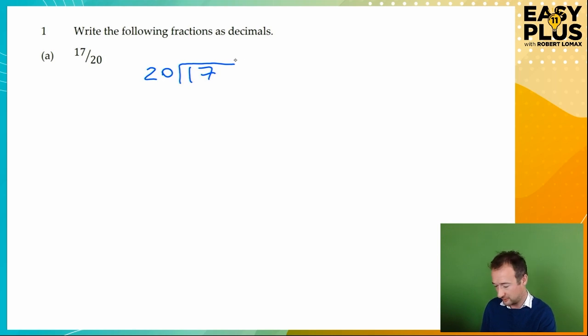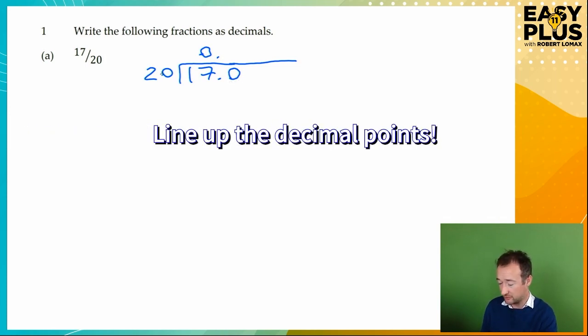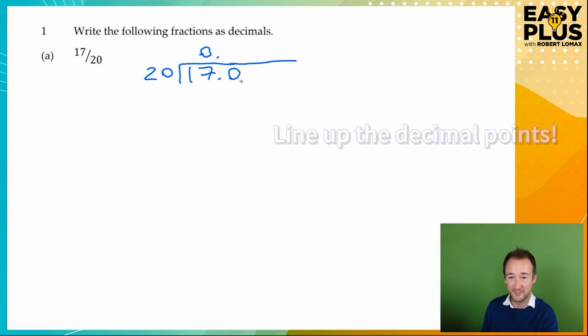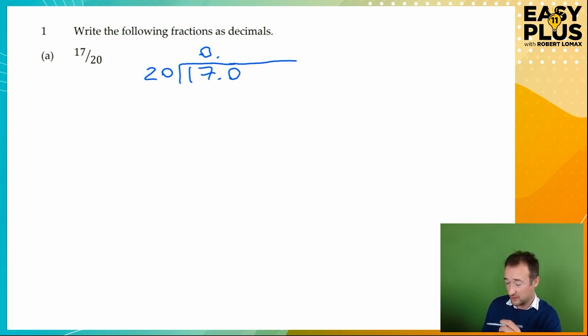17 divided by 20. Now, 20 doesn't naturally go into 17, but if we look at 170, this is a really useful trick. If you have a division that doesn't go because this number is smaller than this number, then you can always add point zero here and put zero point above, and then say how many times does 20 go into 170. Now, 20 doesn't go into 170 exactly, but it does go into 160, and 20 goes into 160, of course, eight times.